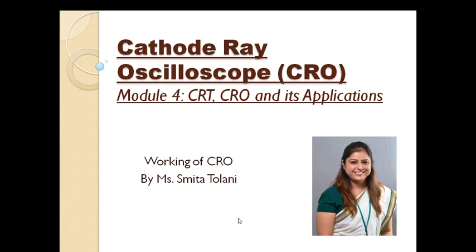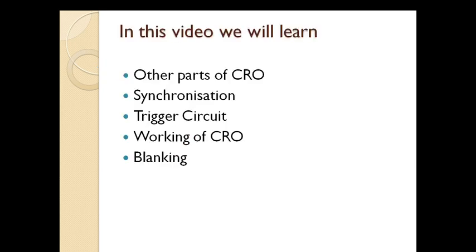In this video we are going to see the remaining parts of CRO and what happens when all these parts come together and how a CRO works. In the previous videos, video number two and video number three, we saw the two most important parts of CRO: the cathode ray tube (CRT) and the time-based circuit. In video number one we learned that CRO consists of seven main parts.